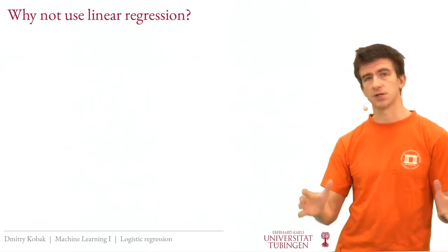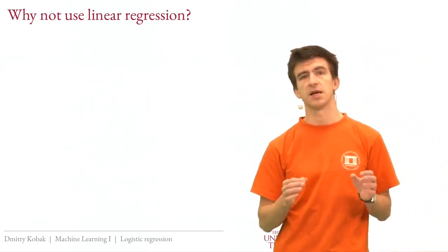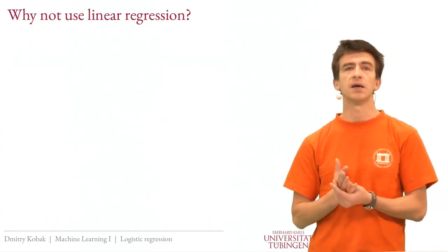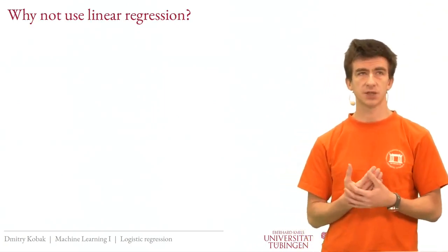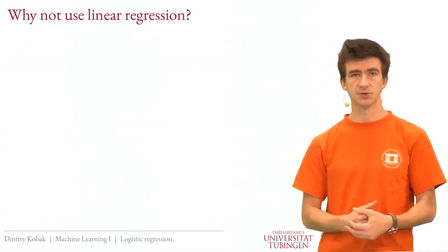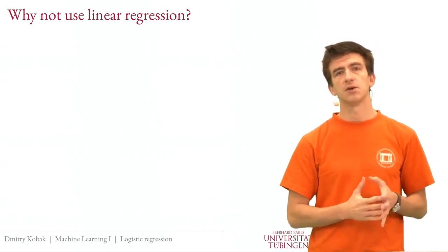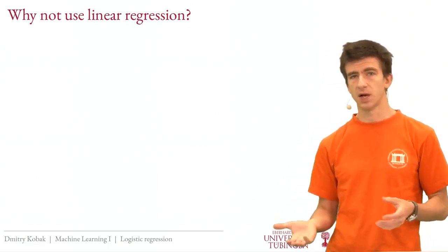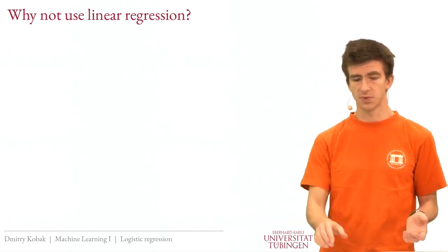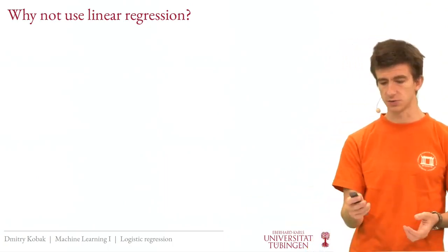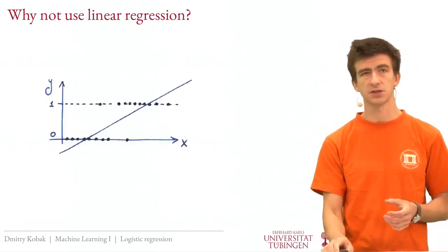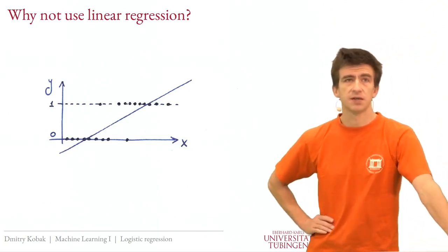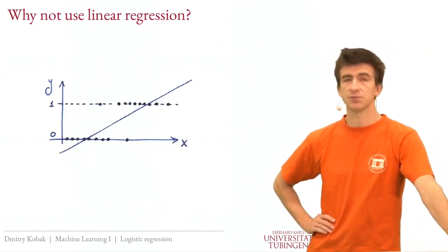The first important question we need to clearly understand is: why do we need something else? Why can't we just keep using linear regression? We have all the machinery nicely set up, and now we have Y's that can be zero and one, so maybe we can just do the same thing. In fact, in some situations it's not too bad, but there are problems with that.